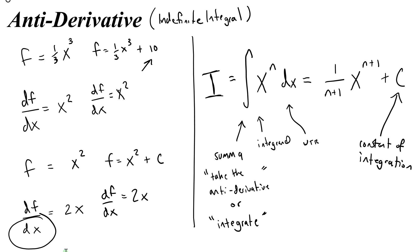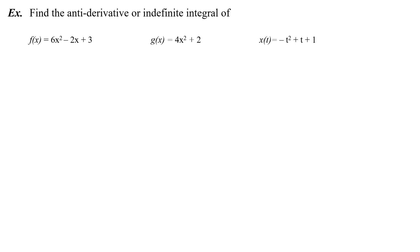Let's see if we can use this equation. Find the antiderivative, or indefinite integral, of these three functions. The integral equals summa, which is our operator that tells us to take the antiderivative, of x to the n, with respect to x. The reverse power rule: there will be something in front that is 1 divided by the power plus 1, and then x to the n plus 1. Then of course we have to add the constant of integration c, because there's no way for us to know what it is, or if it's even there at all.